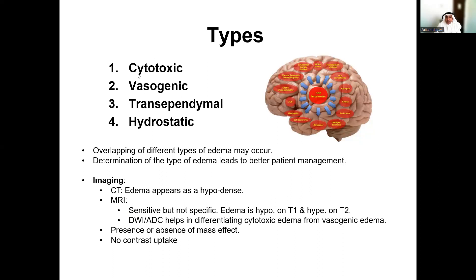There are four main types of brain edema: cytotoxic edema, vasogenic edema, transependymal edema, and hydrostatic edema. There are a variety of causes and etiologies, ranging from neoplastic to infectious to traumatic to degenerative and ischemic. These types may occur individually, but overlap between different types may also happen. Differentiating and identifying the dominant type helps fine-tune the diagnosis and subsequently leads to better patient management.